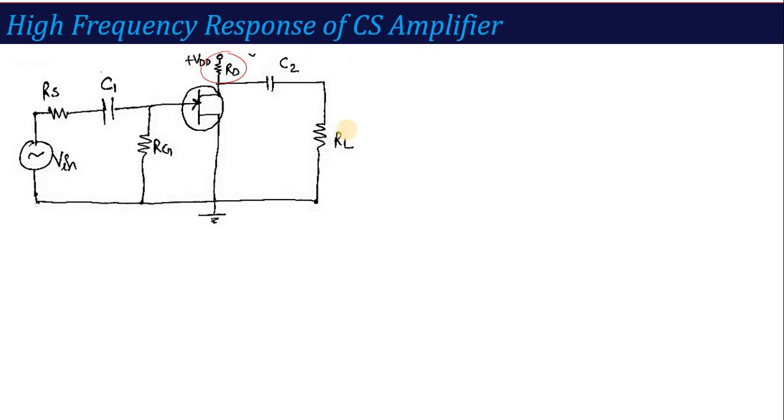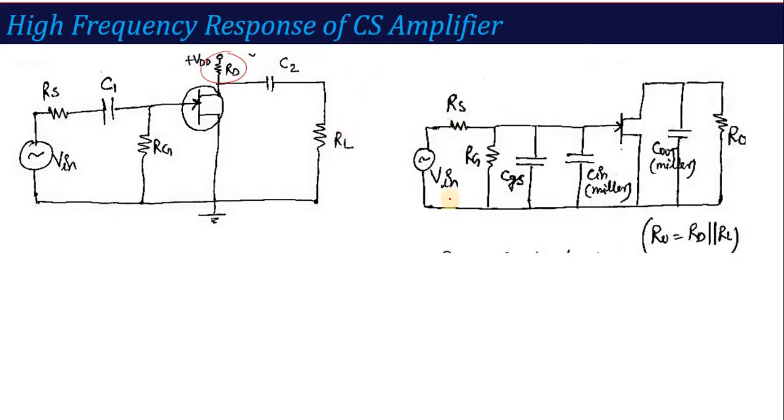First of all, as I have learned in the last lecture for high frequency response of common emitter amplifier, we draw the equivalent circuit using Miller's theorem. If I use Miller's theorem, this is my equivalent circuit.